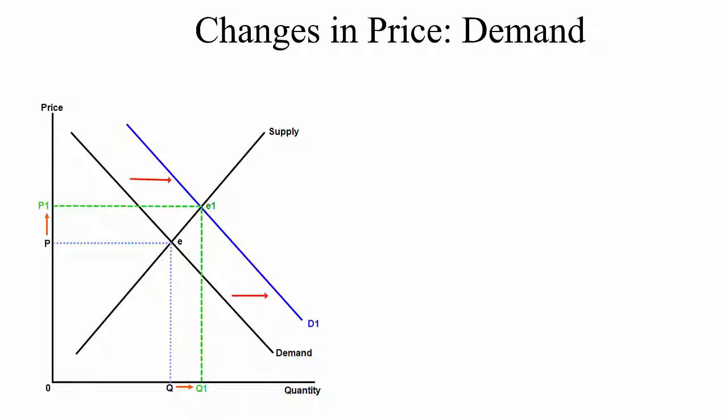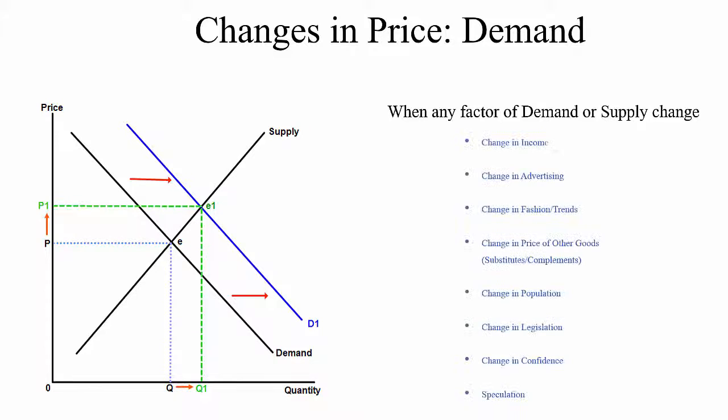We're going to look now at how equilibrium price changes — firstly through demand. If you remember the demand factors such as changes in income and changes in population, these are all relevant because they're going to shift the demand curve. We'll do a rise in demand first, taking income as our example, starting with an increase in income which will increase demand.